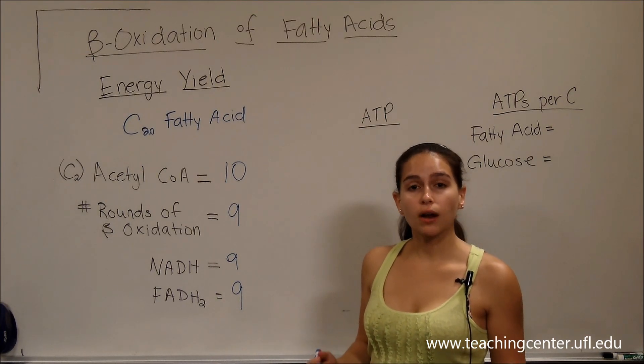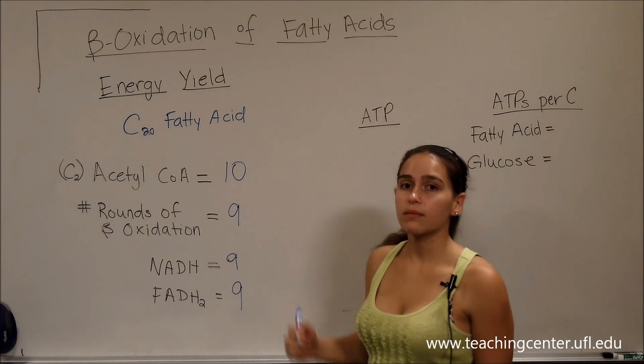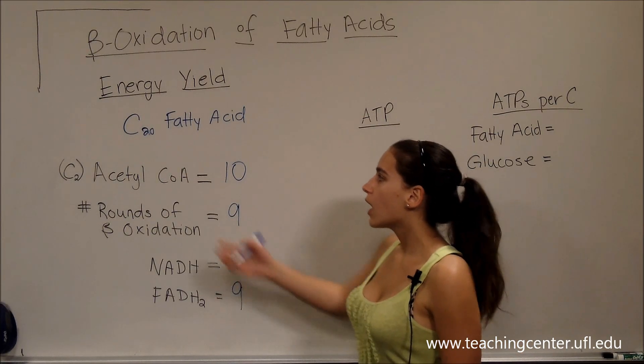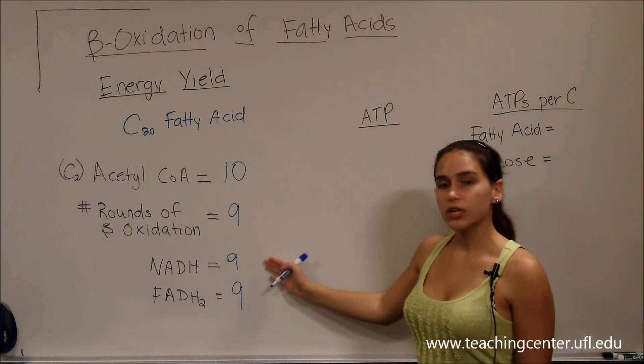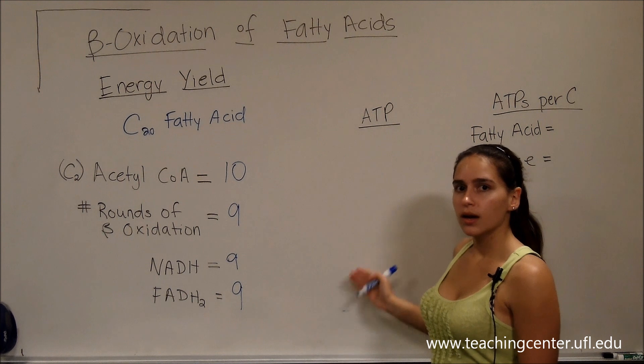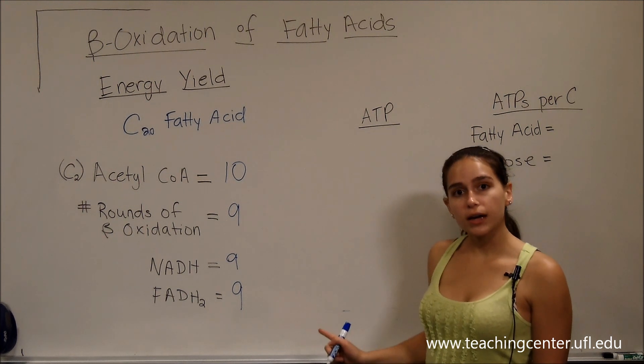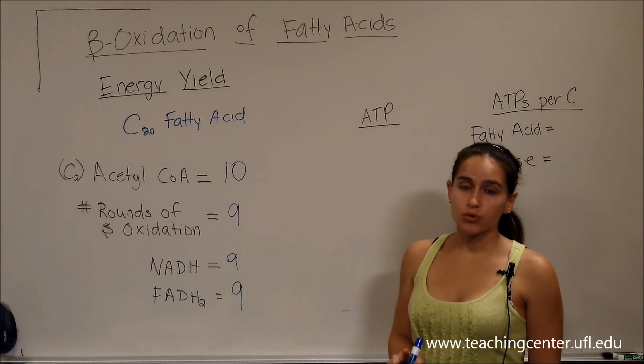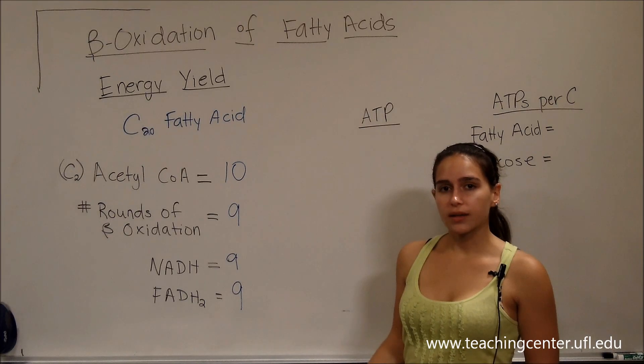So if you're given a question on how many ATPs you get or how many rounds of beta oxidation you have to undergo, you simply need to figure out the number of acetyl-CoA's you get. And from there, you can just do the multiplication I showed you and figure out how many ATPs we have. Don't forget to subtract the two ATPs you use to activate that fatty acid into a fatty acyl-CoA.